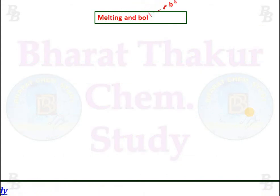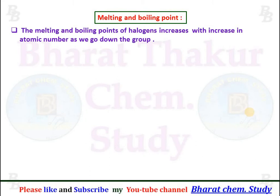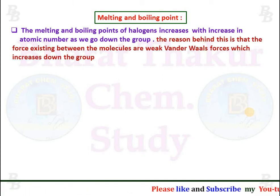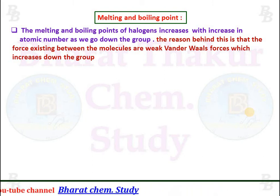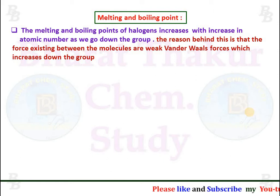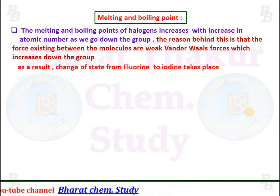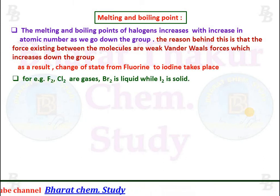Melting and boiling points: the melting and boiling points of halogens increase with increase in atomic number as we go down the group. The reason is that the forces existing between the molecules are weak van der Waals forces, which increase down the group. As a result, the change of state occurs from gas to liquid to solid: Fluorine and Chlorine are gases, Bromine is a liquid, while Iodine is a solid.